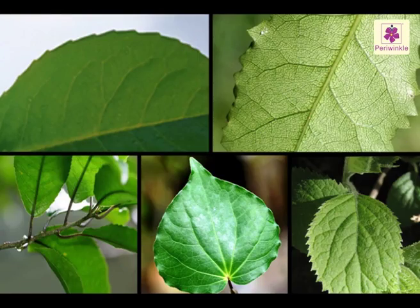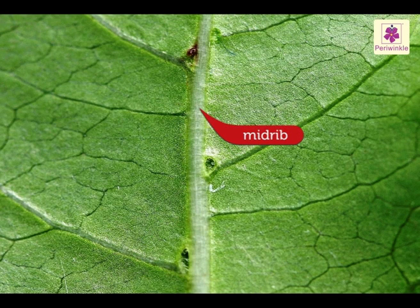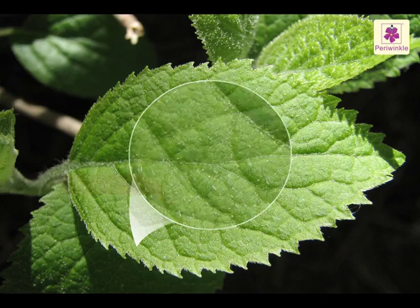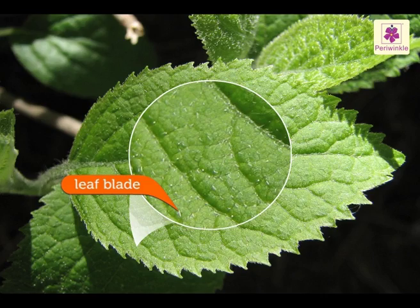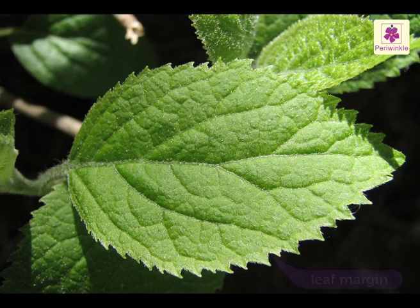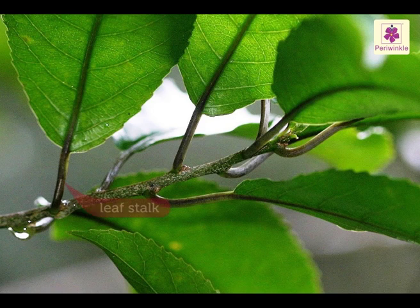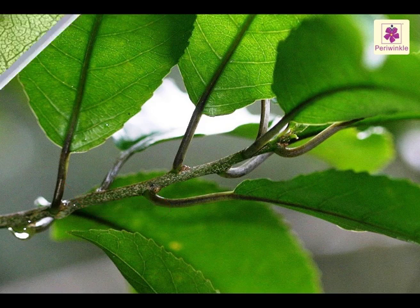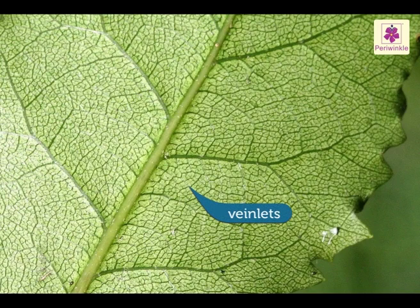Though leaves of different plants are different, they have some common features, like the midrib or main vein, the leaf blade, the leaf margin, the leaf stalk, and the veinlets.